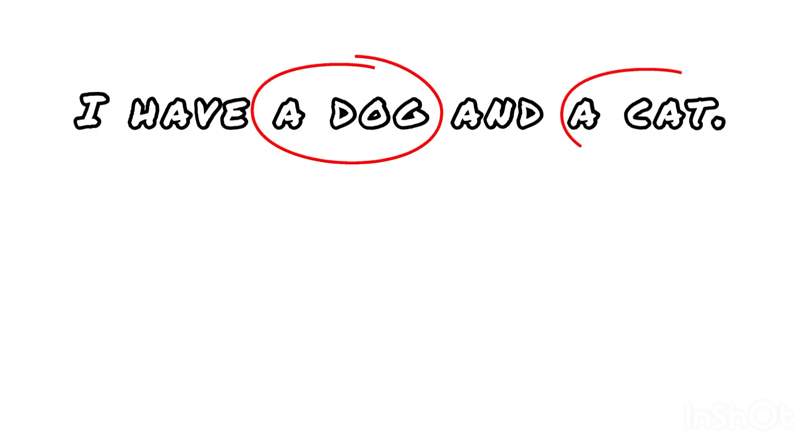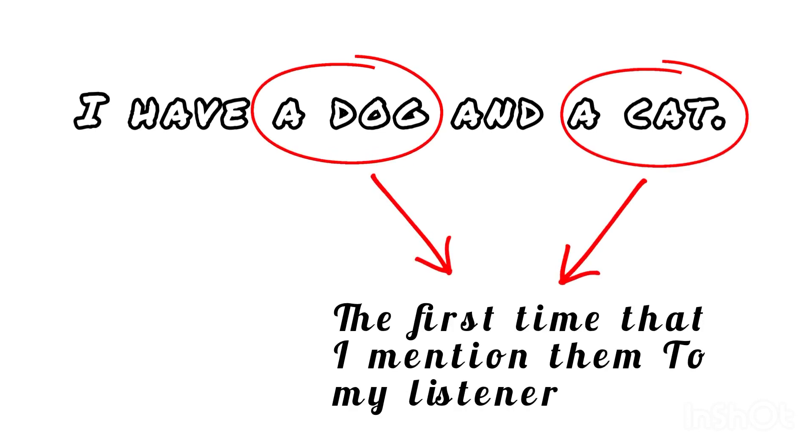I say a dog and a cat in the first sentence because that's the first time that I'm mentioning them to my listener.